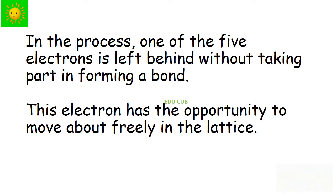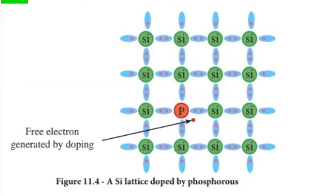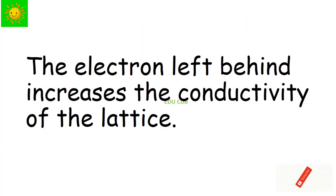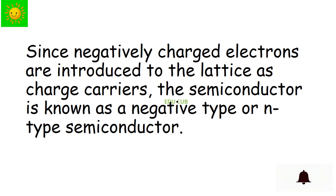This electron has the opportunity to move about freely in the lattice. Now you can see a silicon lattice doped by phosphorus. This shows how a phosphorus atom forms bonds with silicon atoms. The electron left behind increases the conductivity of the lattice. Since negatively charged electrons are introduced to the lattice as charge carriers, the semiconductor is known as negative-type or n-type semiconductor.